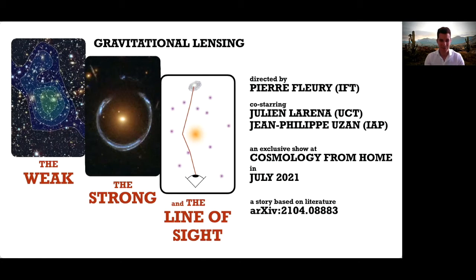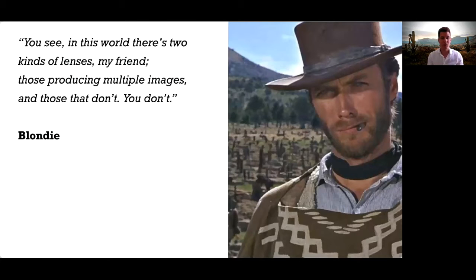Hi, I'm Pierre Fleury from the IFT and this is a pre-recorded talk for the online conference Cosmology from Home 2021. I'm going to talk about gravitational lensing, and the person who talks best about it in my opinion is my friend Blondie, and as he puts it very nicely: in this world there are two kinds of lenses — those that produce multiple images, and those that don't.